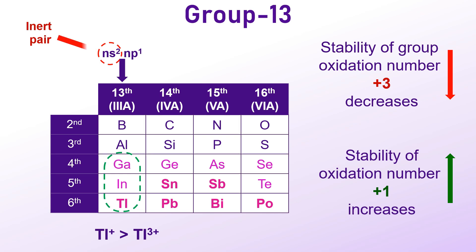As a result, thallium is more stable in the +1 oxidation state, rather than the expected +3 oxidation state.